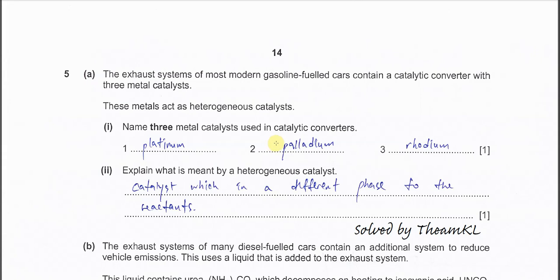Question 5A. The exhaust system is mostly fitted with a catalytic converter, and normally metal catalysts are used. For part 1, name 3 metal catalysts used in these converters. They are platinum, palladium, and rhodium. These 3 metal catalysts have just been added into the syllabus, so you must know their names.